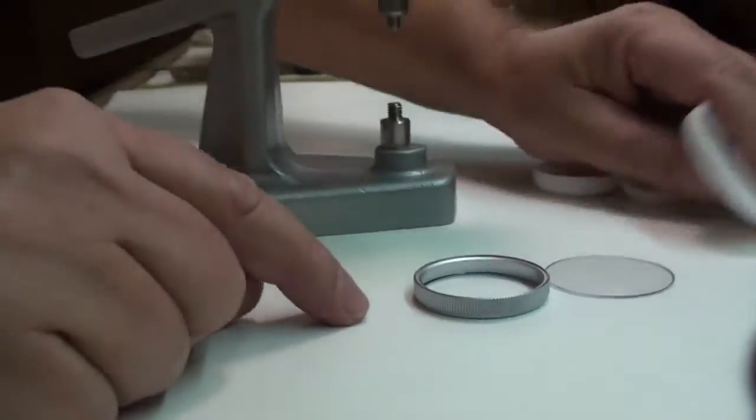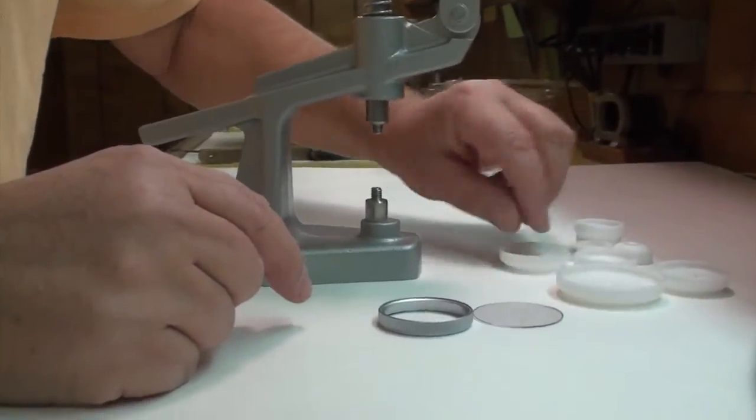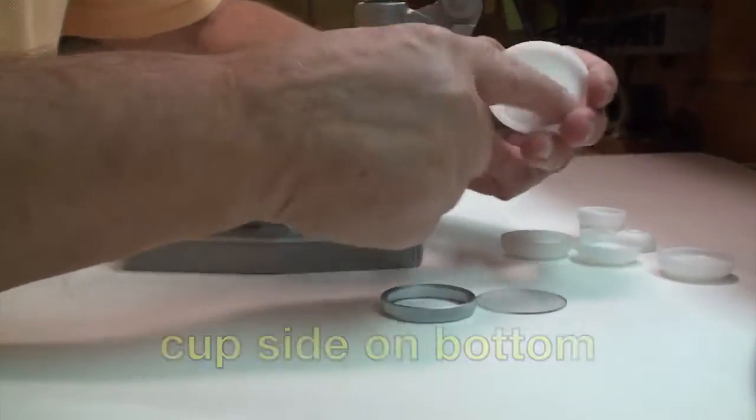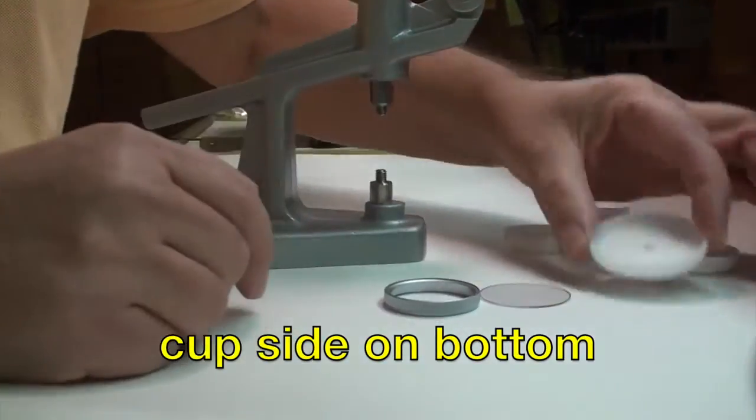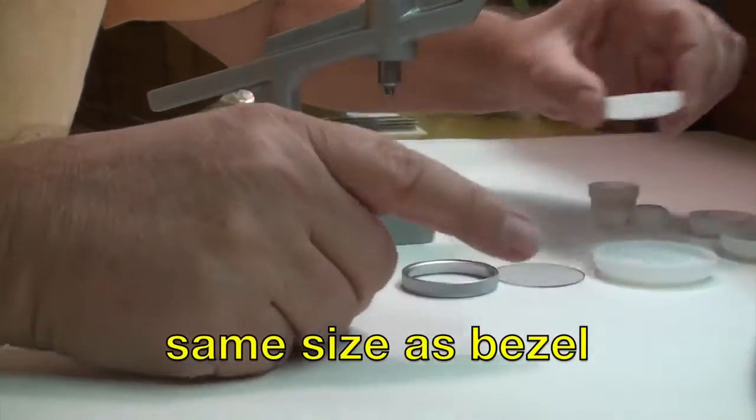Then the press comes with a variety of sizes. One side is the cup side, goes down. So let's find the one that's the right size. That seems to be the right size.